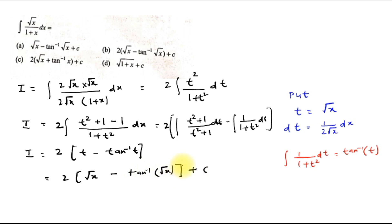So I equals 2(√x - tan⁻¹(√x)) + C. Looking at the given options, option B is the correct one.